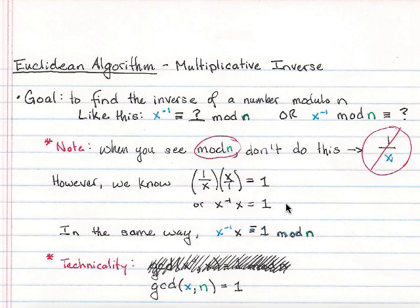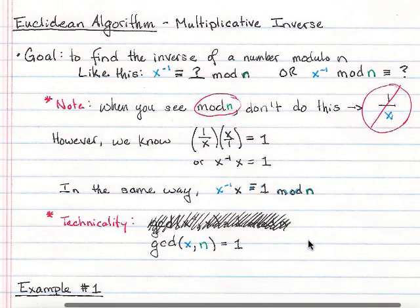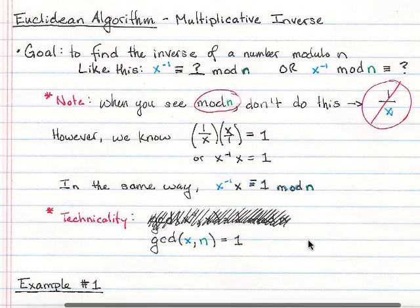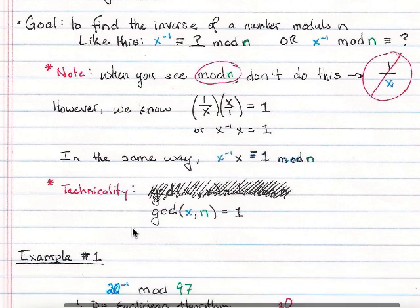So in the same way for this kind of problem, we have x inverse, which we are given a number, times x is congruent to 1 mod n. So it follows the same rules for the name inverse. Another technicality is that the GCD of the two numbers that you're given, the mod and the x that you're trying to find the inverse for, must be 1.